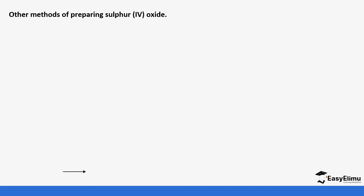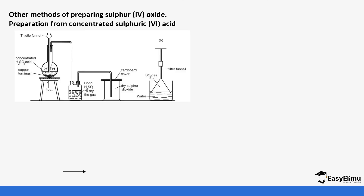Another method of preparing sulfur dioxide is the reaction of concentrated sulfuric acid with copper. In the setup, a thistle funnel brings in the sulfuric acid and is dipped completely into the solution. There are copper turnings in the flask. The reaction is warmed gently since copper turnings are not very reactive. The gas is again passed through concentrated sulfuric acid to dry it, then collected by downward delivery.